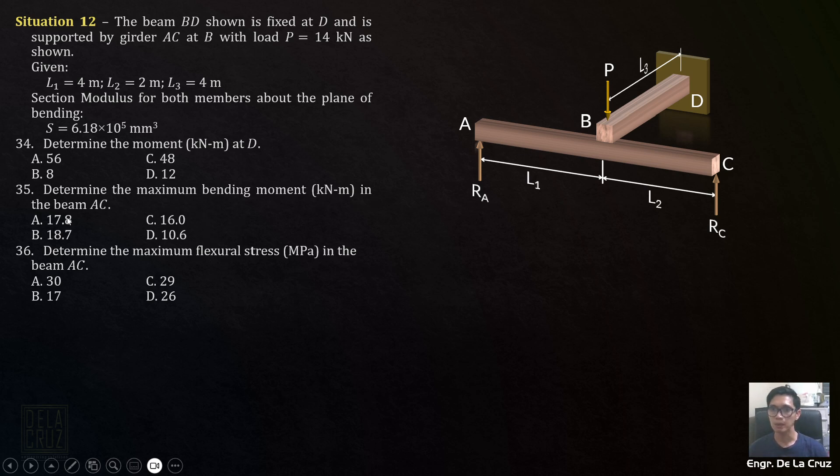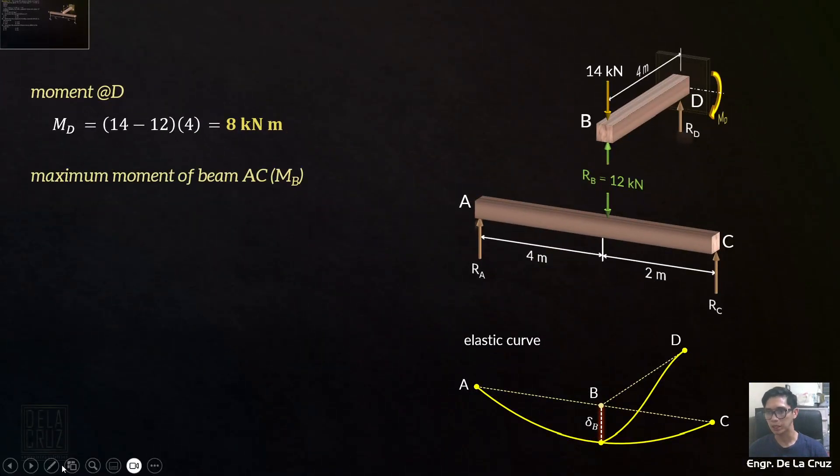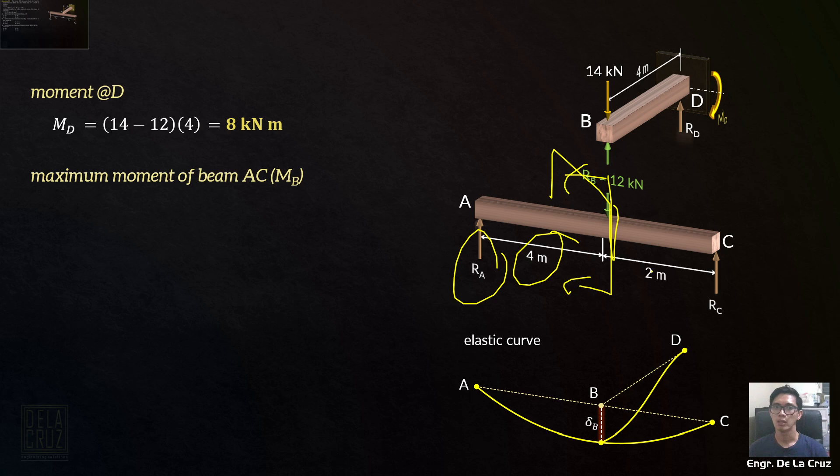Determine the maximum bending moment in beam AC. Maximum bending moment for beam AC. So for a simply supported beam subject to concentrated load, the maximum moment is under the concentrated load. So it's at point B. You can cut there. Then the moment here is just RA times 4. Or you can also use RC times 2. Find the reaction first. Since you have a concentrated load, you can also use the formula. It's easier now. Concentrated load A times B over L.